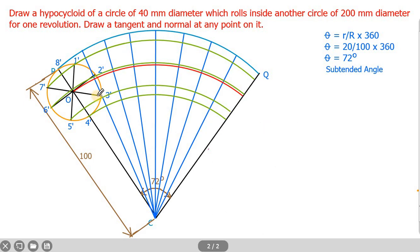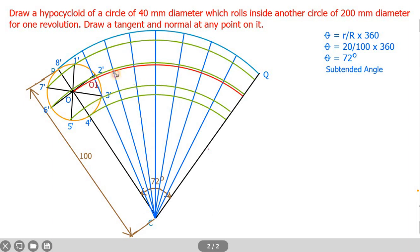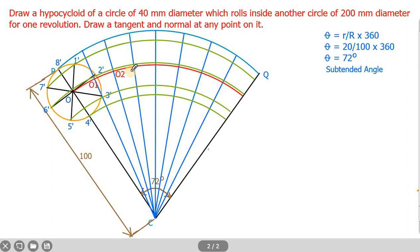The next step is to name all the points on the arc drawn from the center. Since the center is O, name the intersection points on this arc as O1, O2, O3, O4, O5 up to O8.